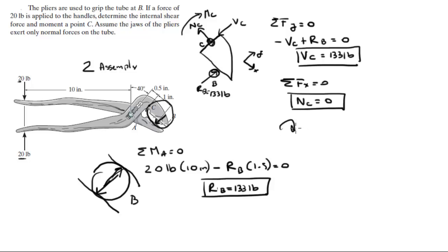And assuming clockwise is positive, sum of the moments at C is equal to zero. So the moment at C minus the moment created by the reaction times one inch, because that's the distance from C to the reaction, is equal to zero. So the moment at C is 133 pounds per inch.